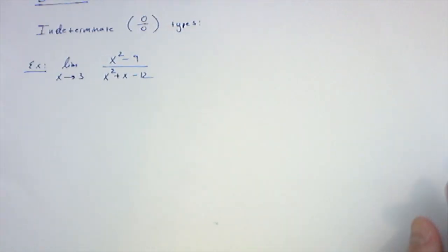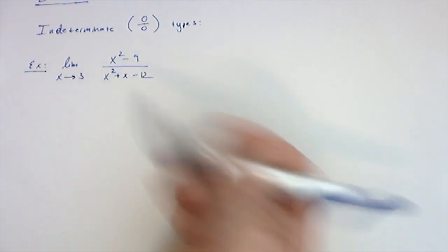Let's do some limits. Here is a limit we're going to see kind of a lot in the future. It's an indeterminate 0 over 0 type, meaning if I plugged in x equal to 3, we get 9 minus 9 on top which is 0, and 9 plus 3 which is 12 minus 12 which is also 0.